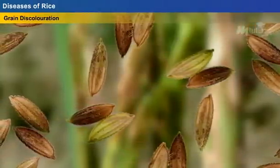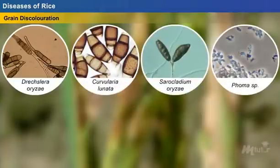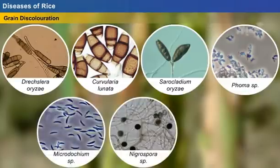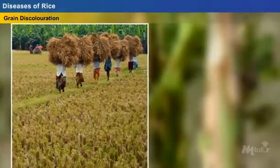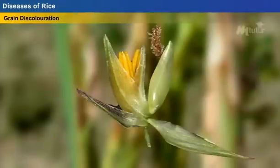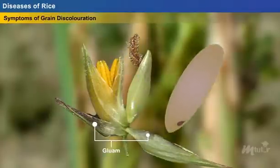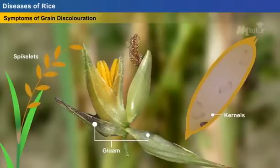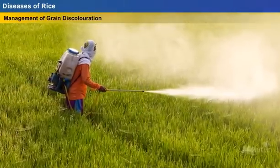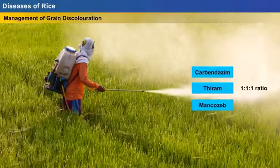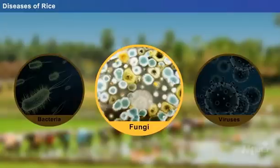Grain discoloration is a serious disease caused by a wide range of microorganisms such as Drechslera oryzae, Curvularia lunata, Sarocladium oryzae, and Fusarium species. The grains are subjected to infection either after milk stage, after harvest, or during the process of storage. The infection may occur externally on the glumes or internally on the kernels, resulting in discoloration of the glumes or kernels. Symptoms include darkening of glumes or spikelets to brown or black colour and appearance of dark brown or black spots on the grains. Grain discoloration can be prevented by spraying Carbendazim, Thiram, and Mancozeb at a 1:1:1 ratio during the middle of the flowering stage.